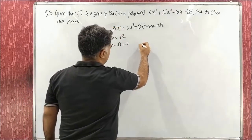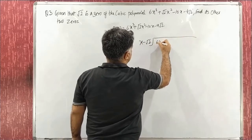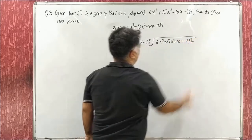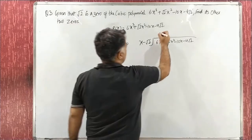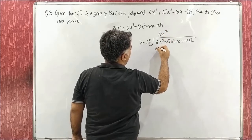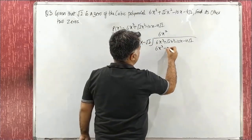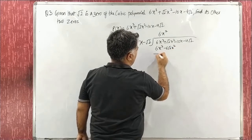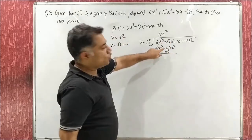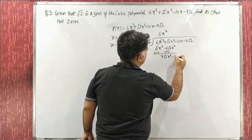Now let's see what happens. We write x − √2 and divide the full polynomial 6x³ + √2x² − 10x − 4√2. First step: multiply to get 6x². This gives 6x³, and −√2 × 6 gives −6√2x². Now change signs: negative, positive, cancel out. 6√2 + √2 gives 7√2x² − 10x.